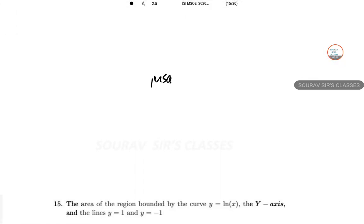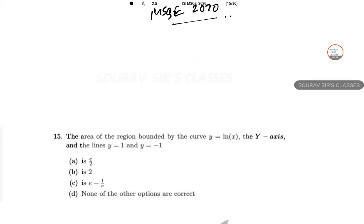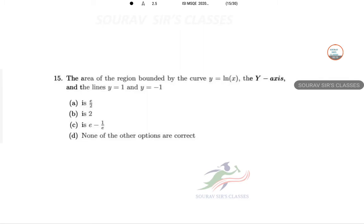Students, today's video is ISI MSQE 2020 solution. The problem is: find the area of the region bounded by the curve y equals log of x, the y-axis, and the lines y equals 1 and y equals minus 1.